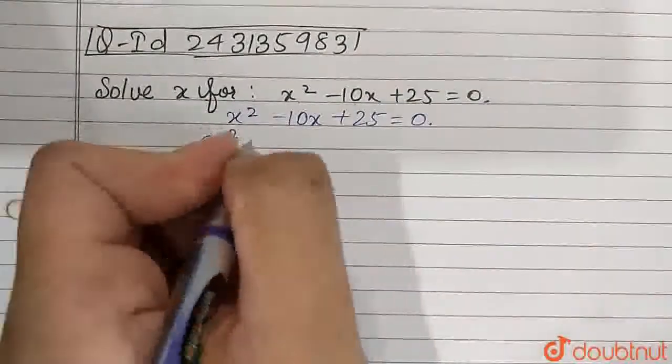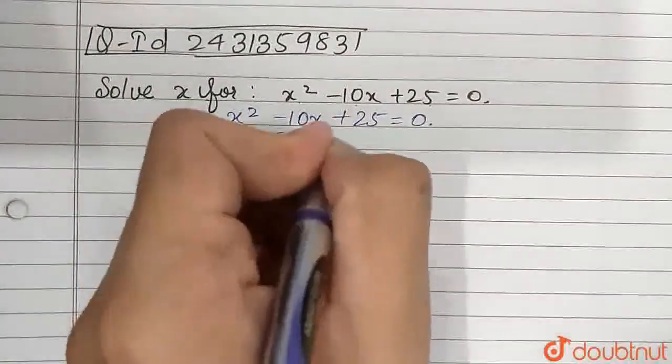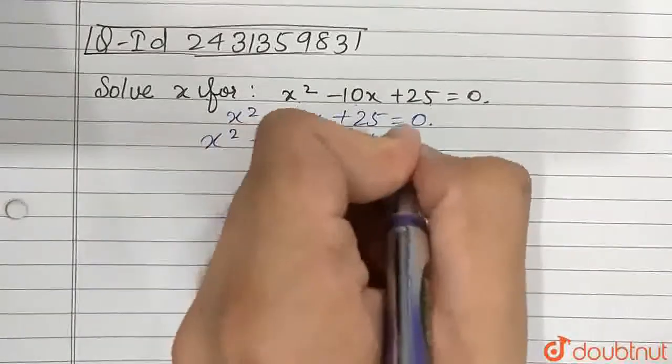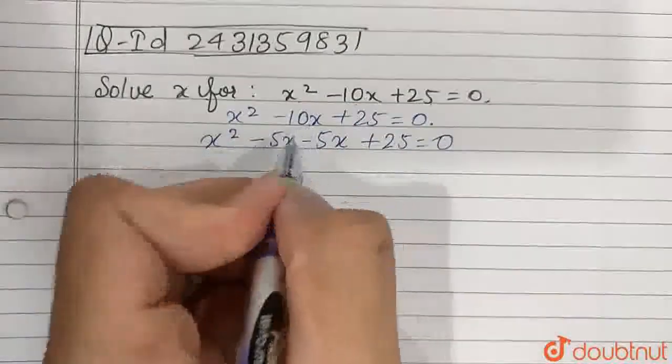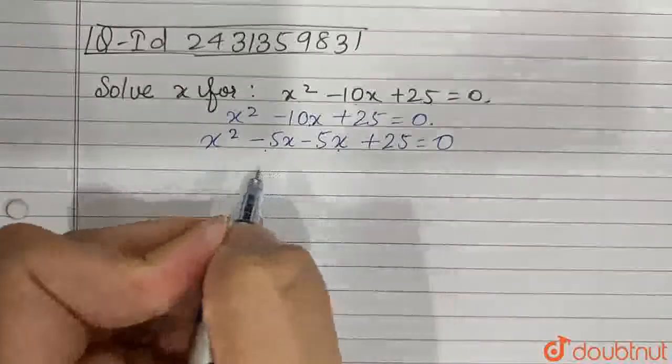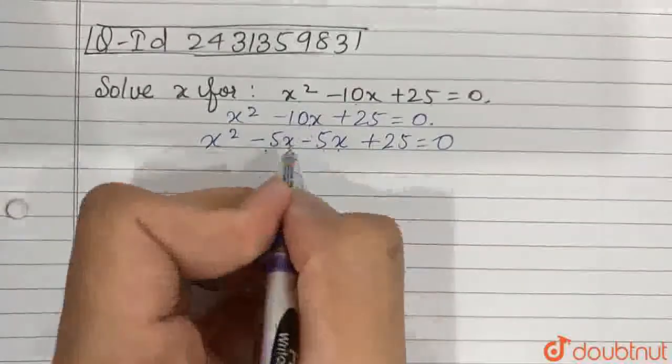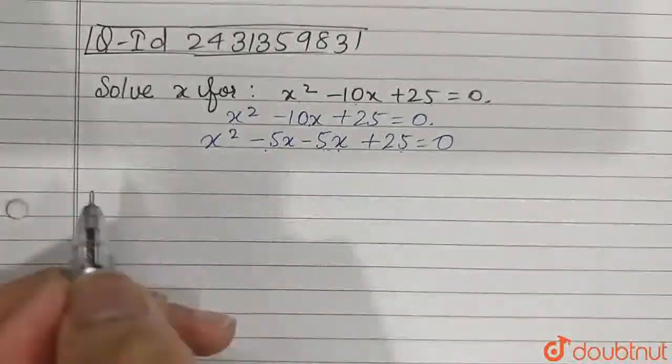x² - 5x - 5x + 25 = 0. We broke down -10x into -5x and -5x, so that the sum equals -10 and the multiplication equals 25x².